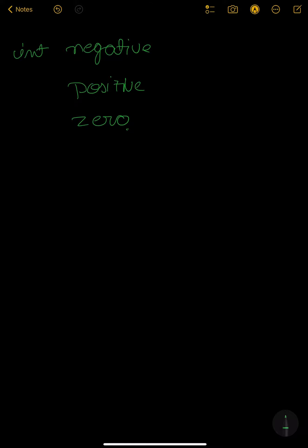It is guaranteed that the solution always exists. One thing to think about is that two negative elements can make a positive product, but two positive elements can't make a negative product. So one condition to consider is that the positive array could have zero size.